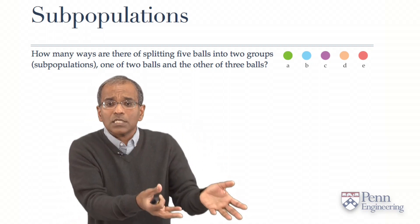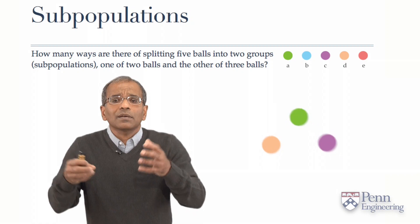One subpopulation with two elements, and another subpopulation with three elements. So, for example, let's say we pick our favorite peach, green, and purple balls from this collection of five.